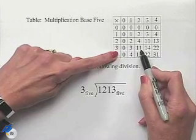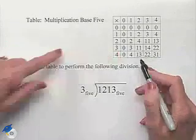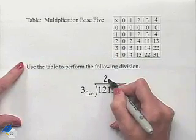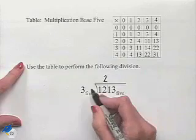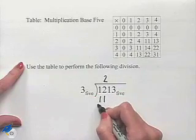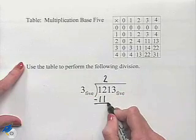We note that 3 times 2 would give us 1, 1. So, we're going to write the 2 down and then multiply through. 3 times 2 would be 1, 1. Write it down under the 1, 2 and subtract.